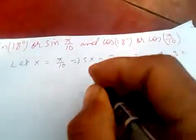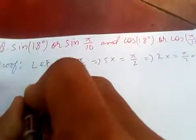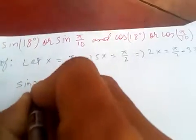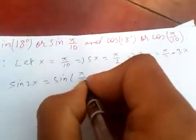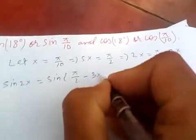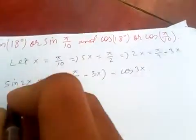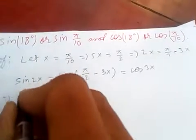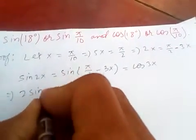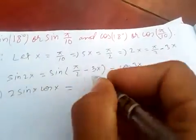Now if you take sine of both sides, sine 2x equals sine of pi over 2 minus 3x, which is cosine 3x. And sine 2x is 2 sine x cosine x, and cosine 3x is 4 cosine cubed x minus 3 cosine x.